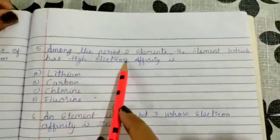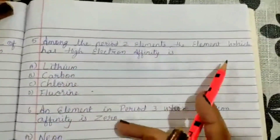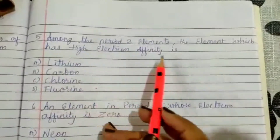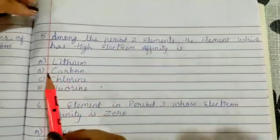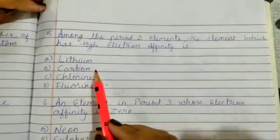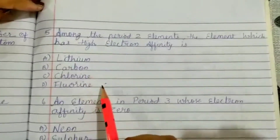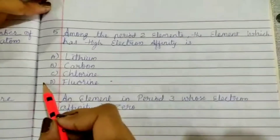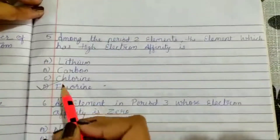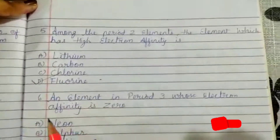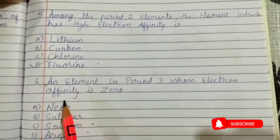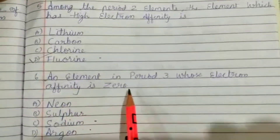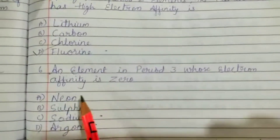Among the period 2 elements, the element which has the highest electron affinity is — lithium, carbon, chlorine, or fluorine? The correct answer is option D: fluorine.